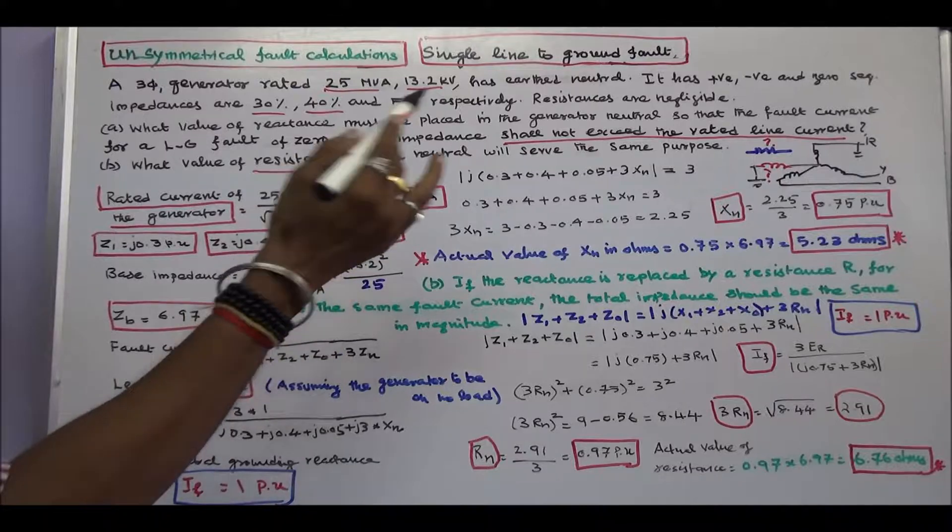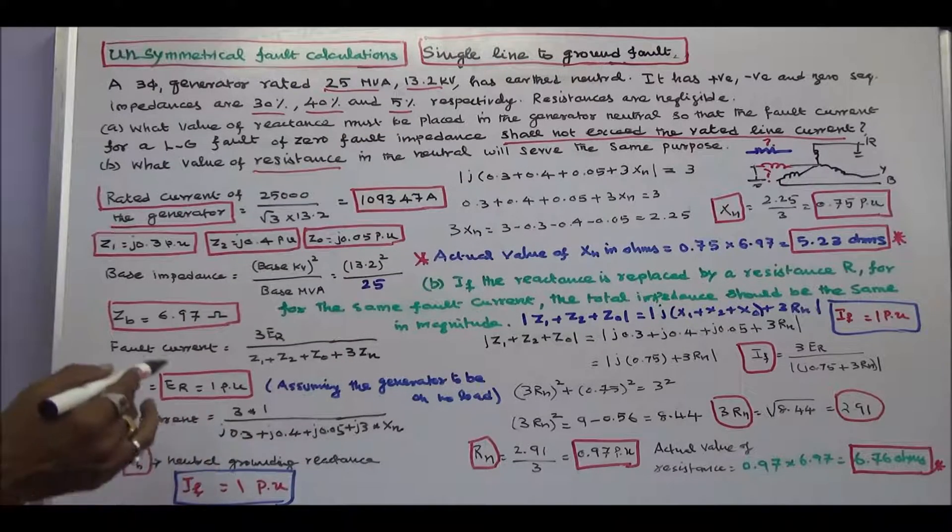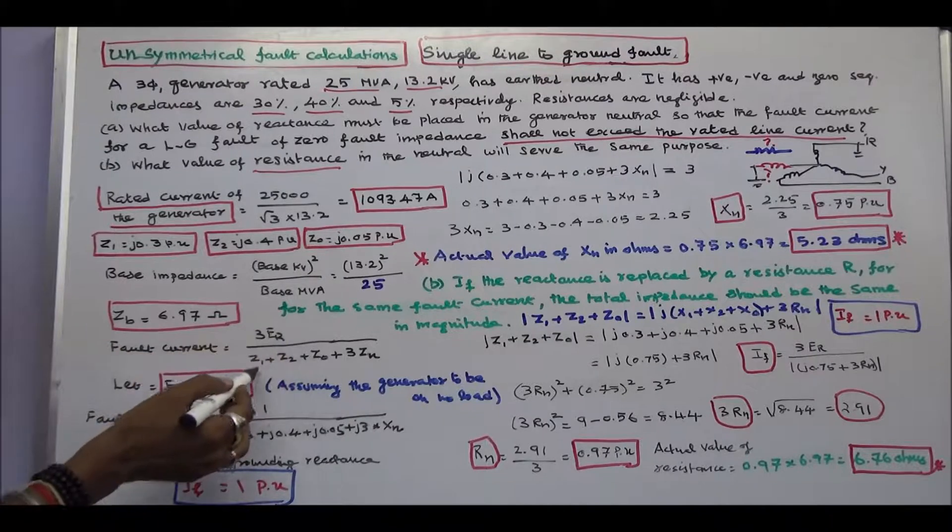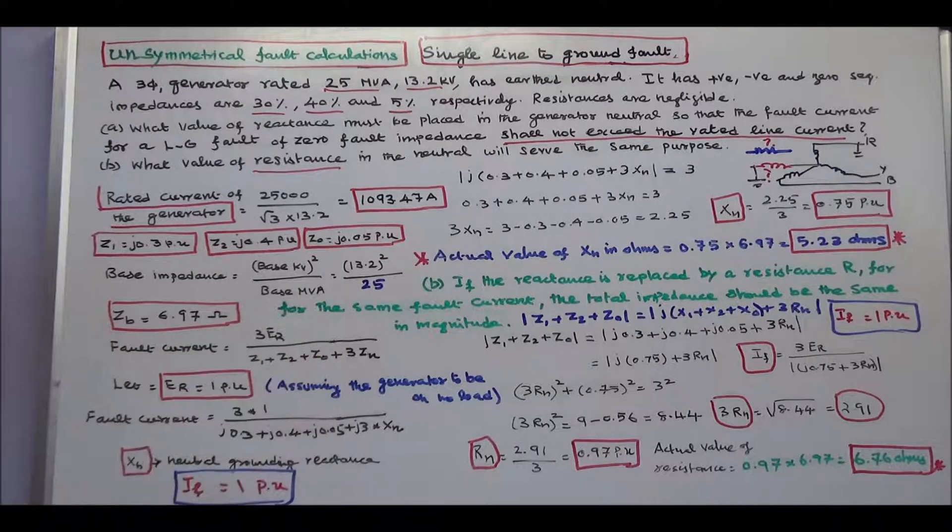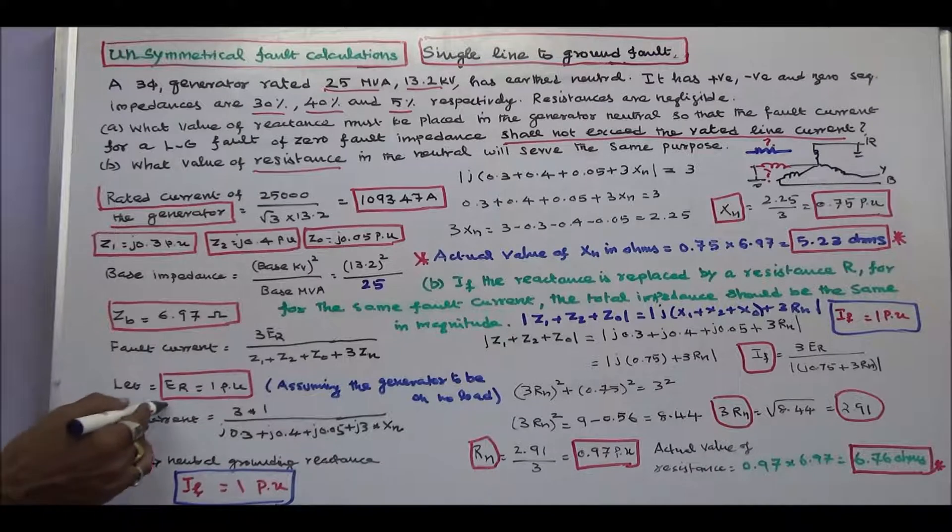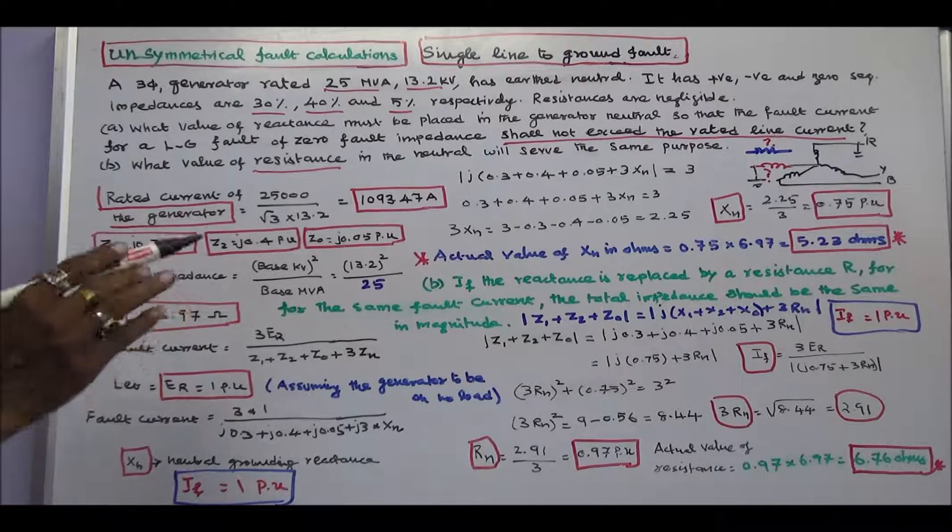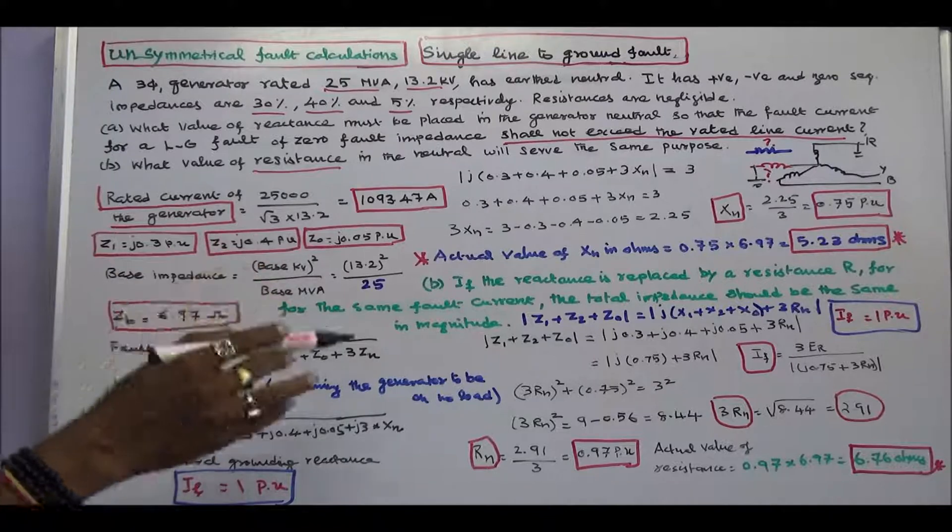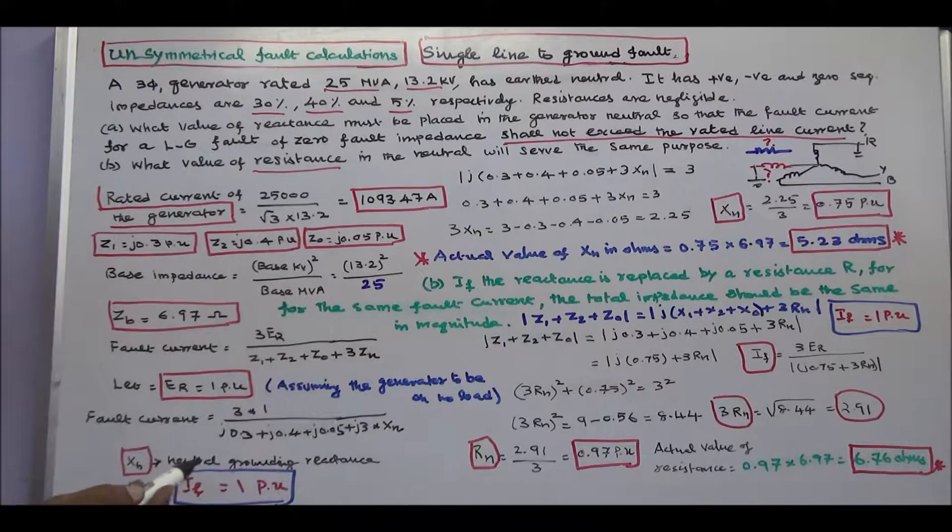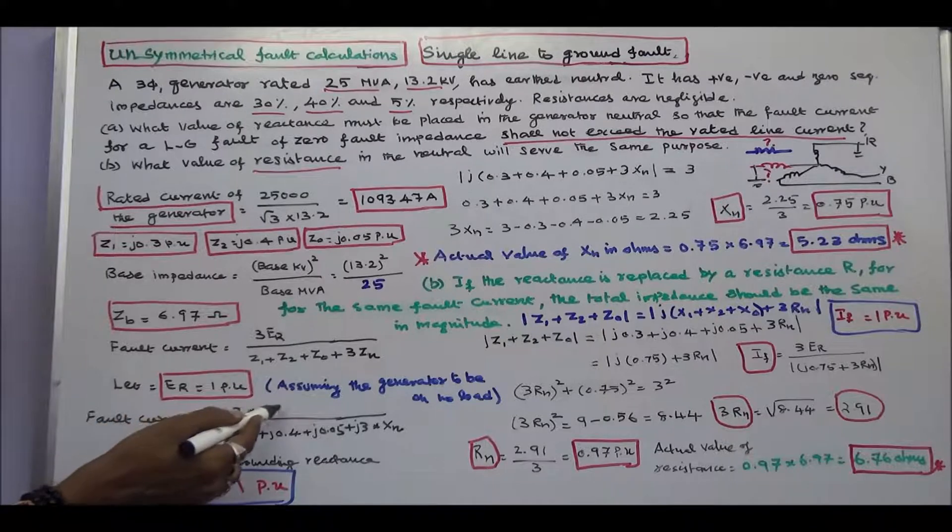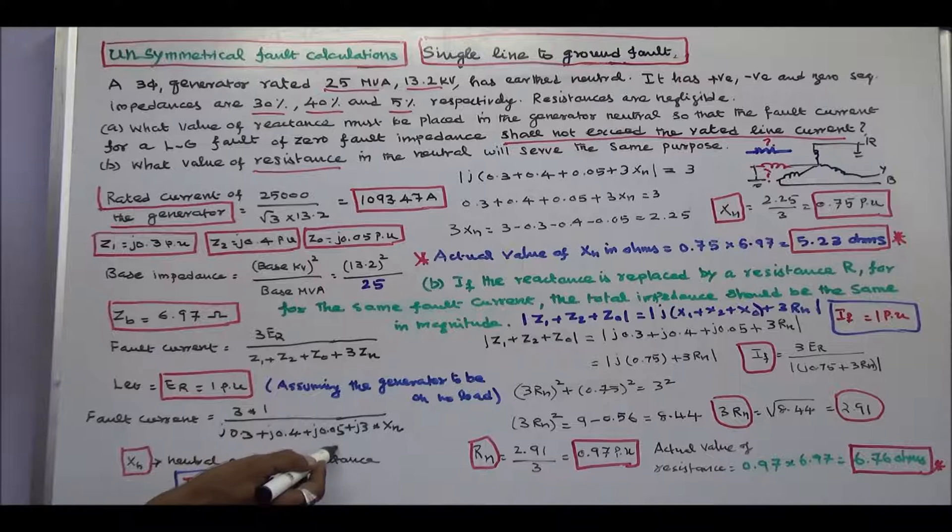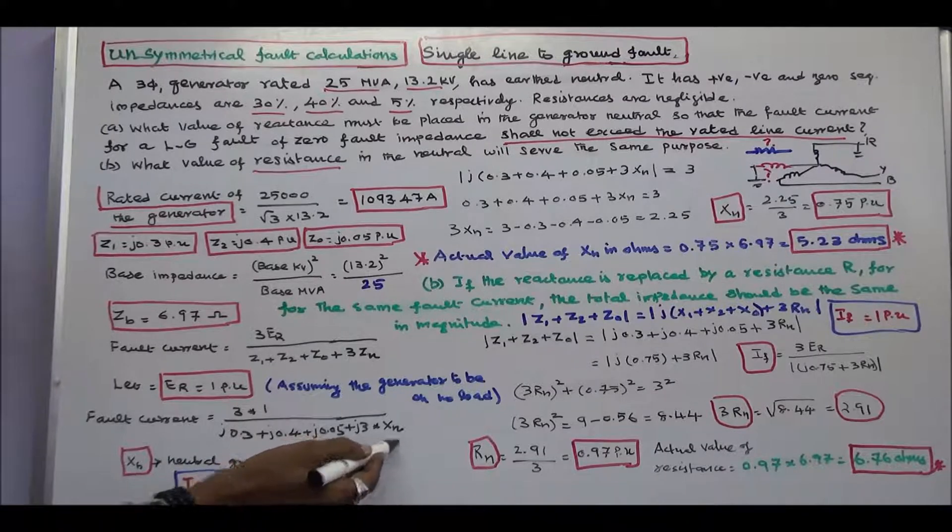We know that in a single line to ground fault, fault current IF is equal to 3 into ER divided by Z1 plus Z2 plus Z0 plus 3 into Zn. Let ER is equal to 1 per unit, i.e. generated EMF per phase, assuming the generator to be on no load. Fault current IF is equal to 3 into 1 divided by j0.3 plus j0.4 plus j0.05 plus j3 into Xn.